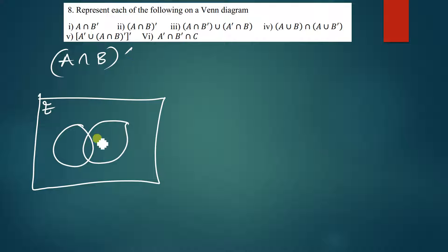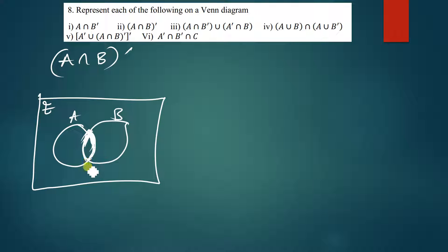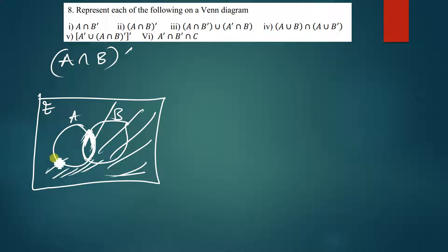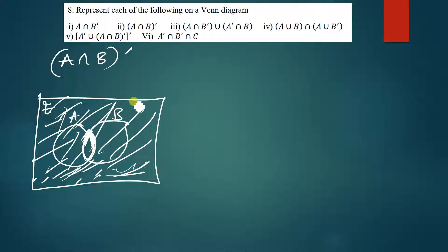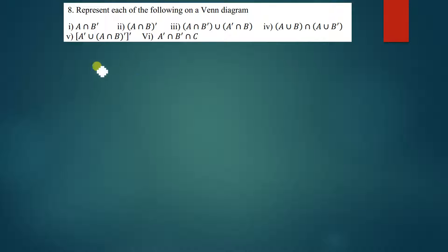A intersection B is just this part here because A is this one and B is this one. Now (A intersection B) complement means everything that is not part of that middle section — we shade everything outside that small part in between. That is our (A intersection B) complement, and this is also the solution. You just need to shade outside the intersection part.